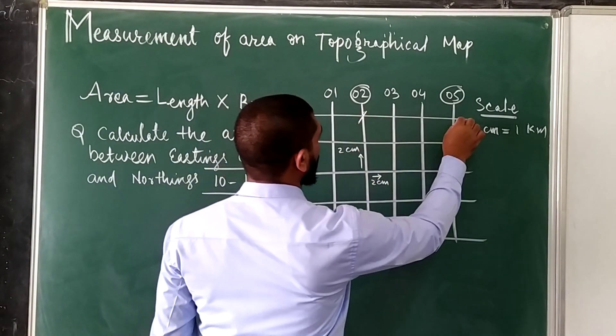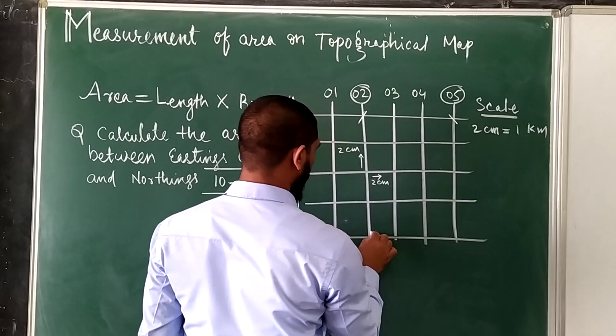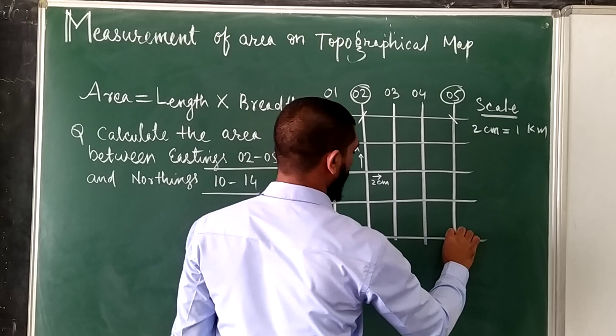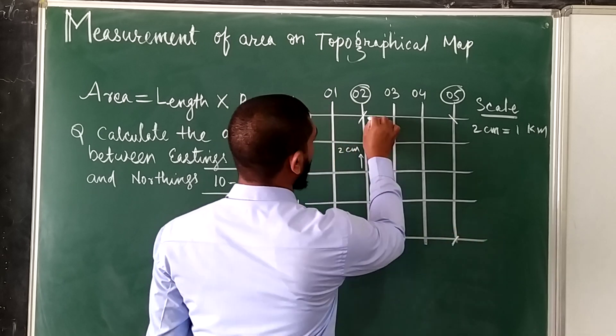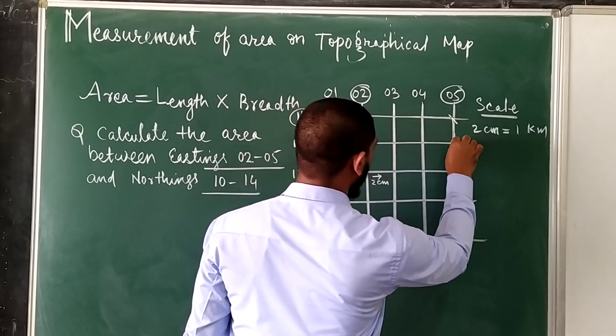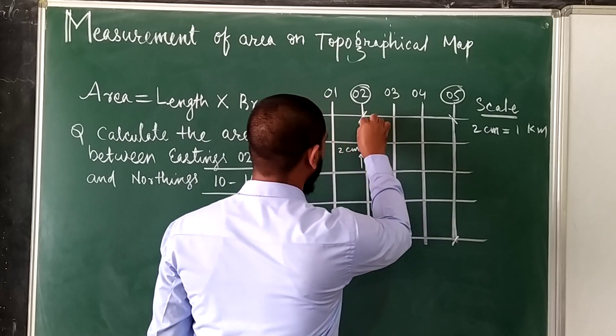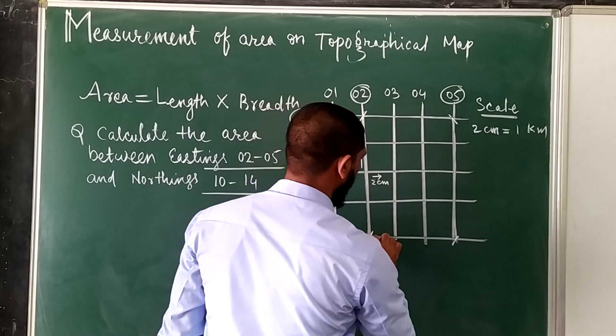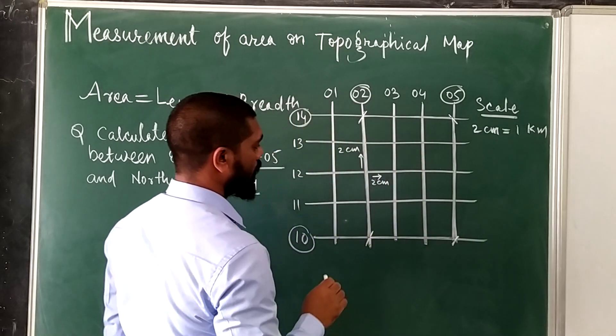Let's see, this is intersecting here, this is here, and this is here. So this is the area that our answer will be, right?